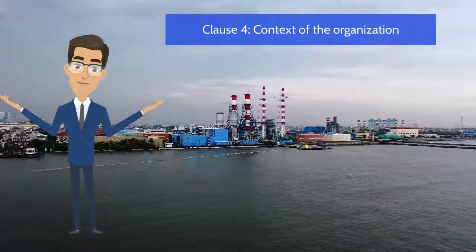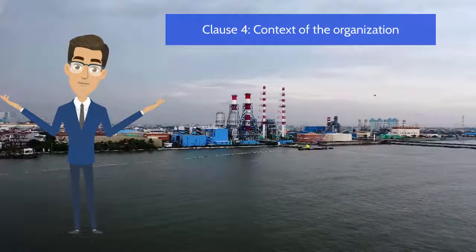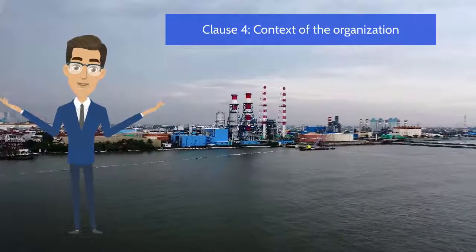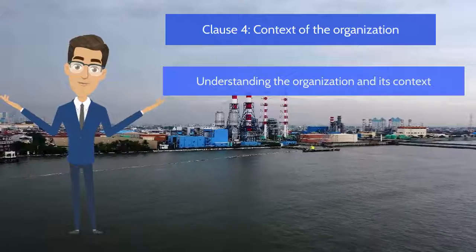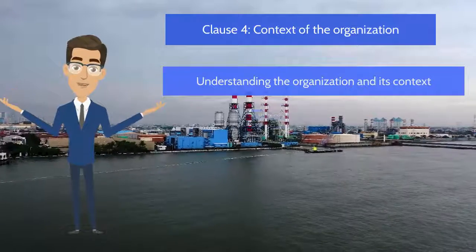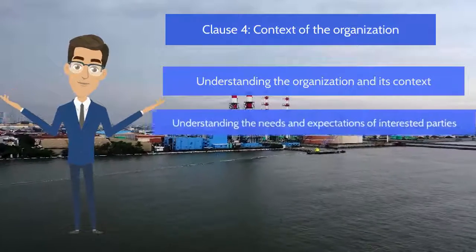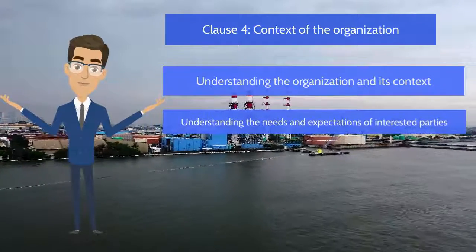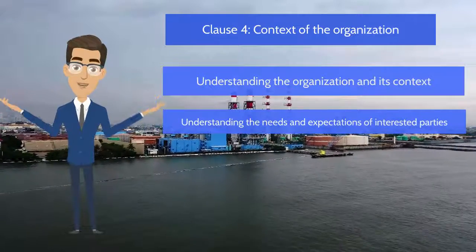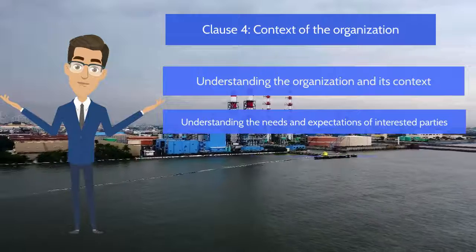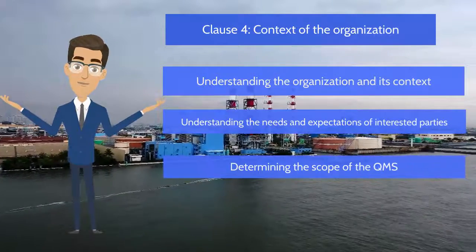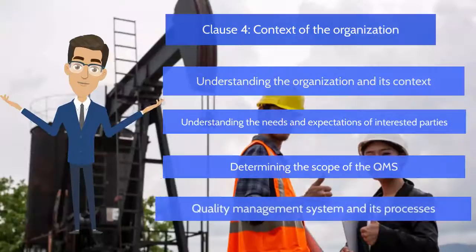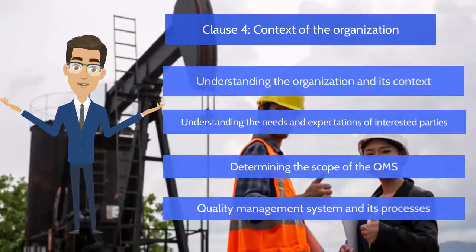Clause 4 of ISO 9001 contains: understanding the organization and its context, understanding the needs and expectations of interested parties, determining the scope of the QMS, and the quality management system and its processes.